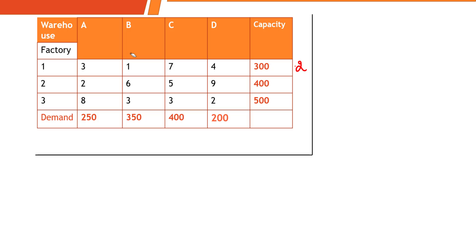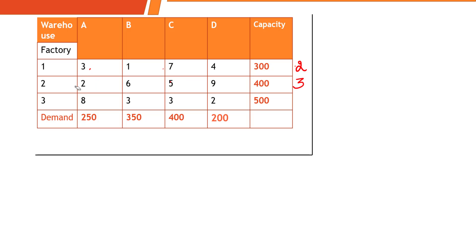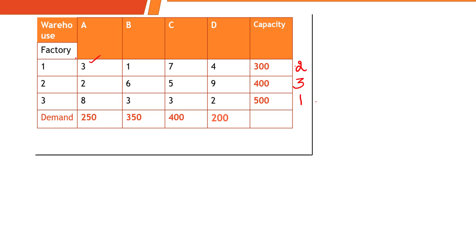Move to the second row: the values are 2, 6, 5, and 9. The two least values are 2 and 5. So 5 minus 2 gives a row penalty of 3. In the third row we have 8, 3, 3, and 2. The least is 2 and the second least is 3. So 3 minus 2 gives a row penalty of 1.